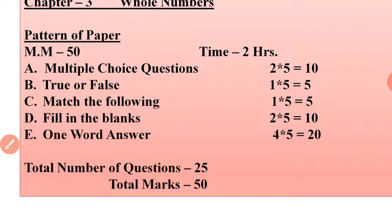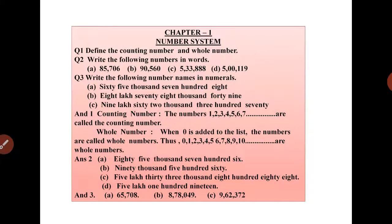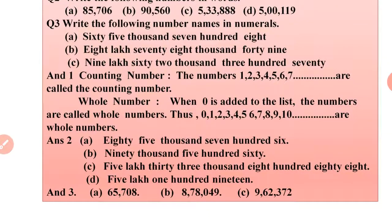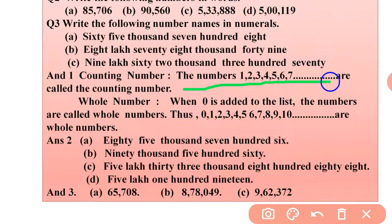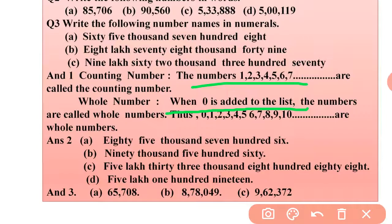Now let's discuss important questions from Chapter 1 - Number System. First question: define counting numbers and whole numbers. Counting numbers are 1, 2, 3, 4, 5, 6... starting from 1 and never ending. Whole numbers are formed when 0 is added to the counting numbers, so 0, 1, 2, 3, 4, 5, 6... are called whole numbers.